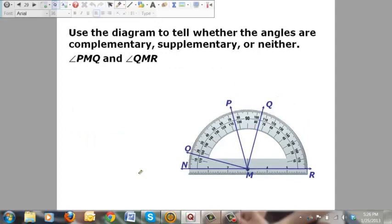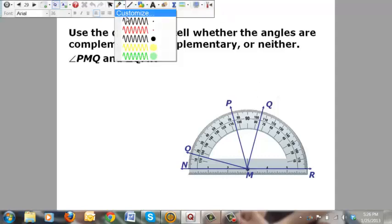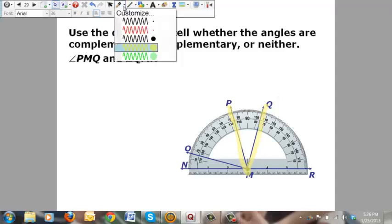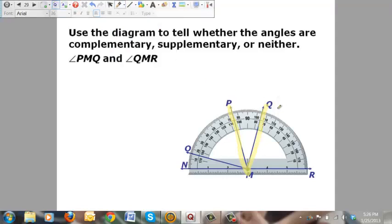Alright, here's another example problem. Use a diagram to tell whether the angles are complementary, supplementary, or neither. The first angle is going to be angle PMQ. The second angle is going to be angle QMR.